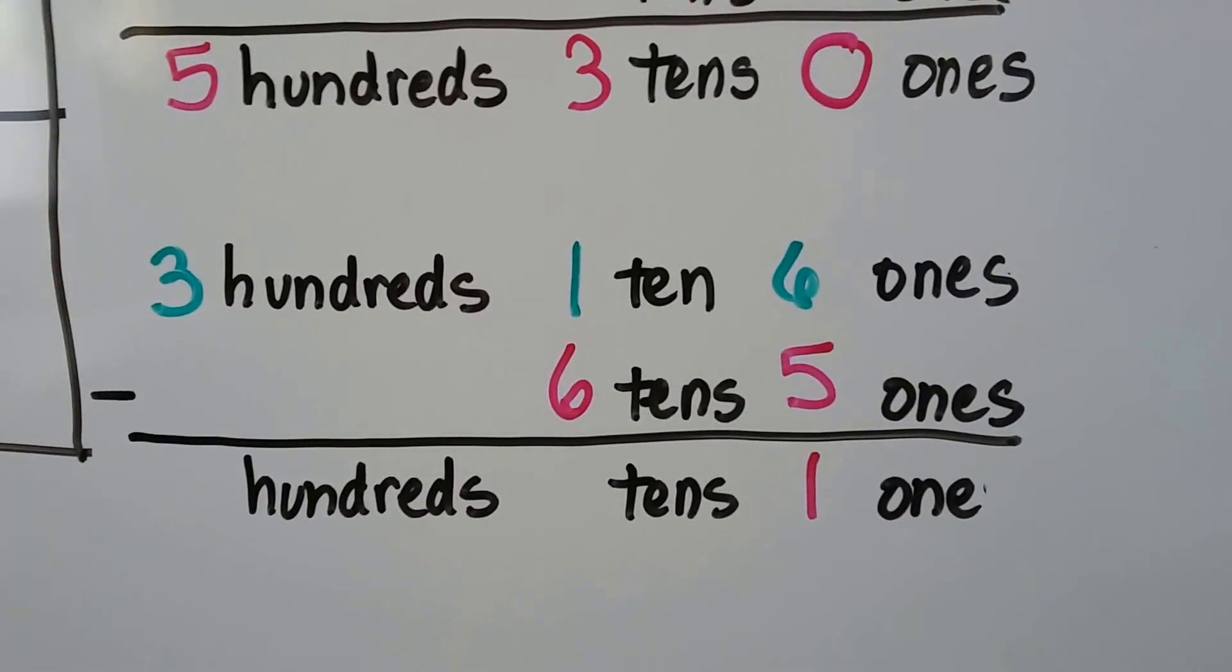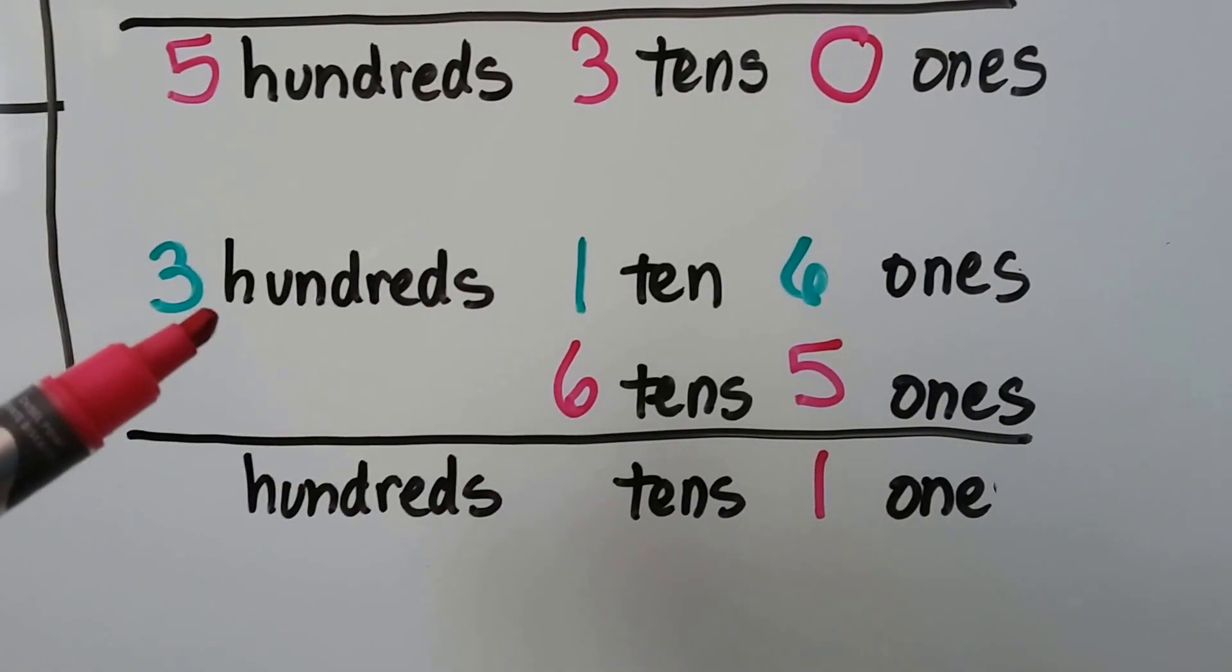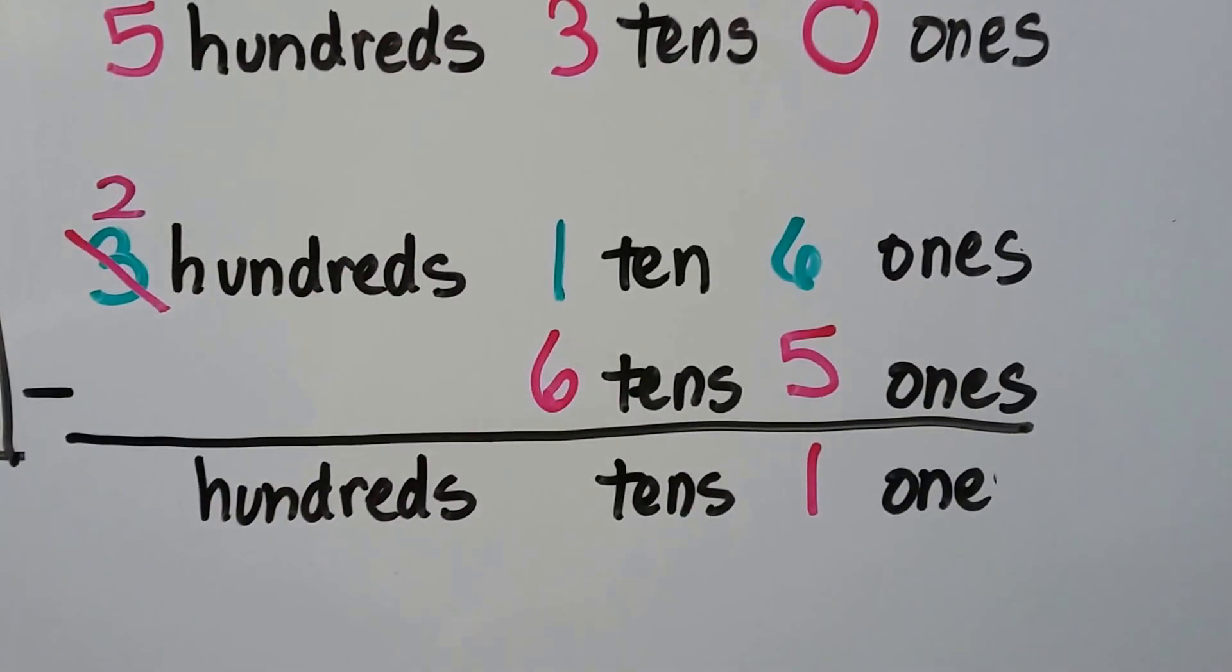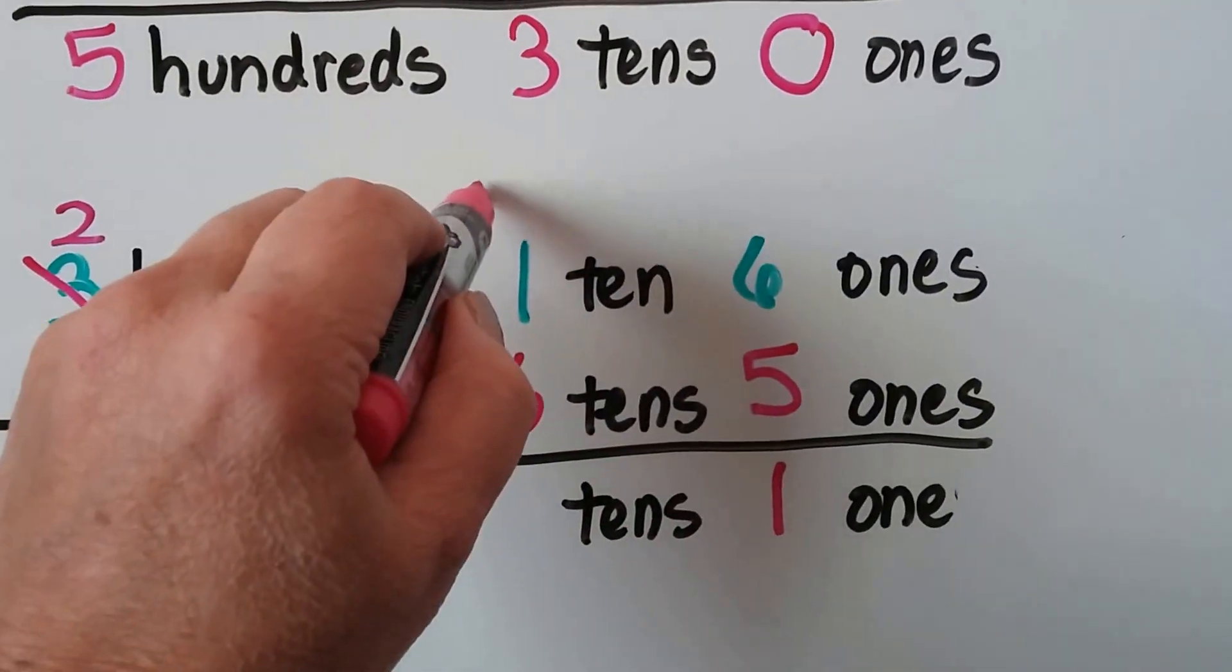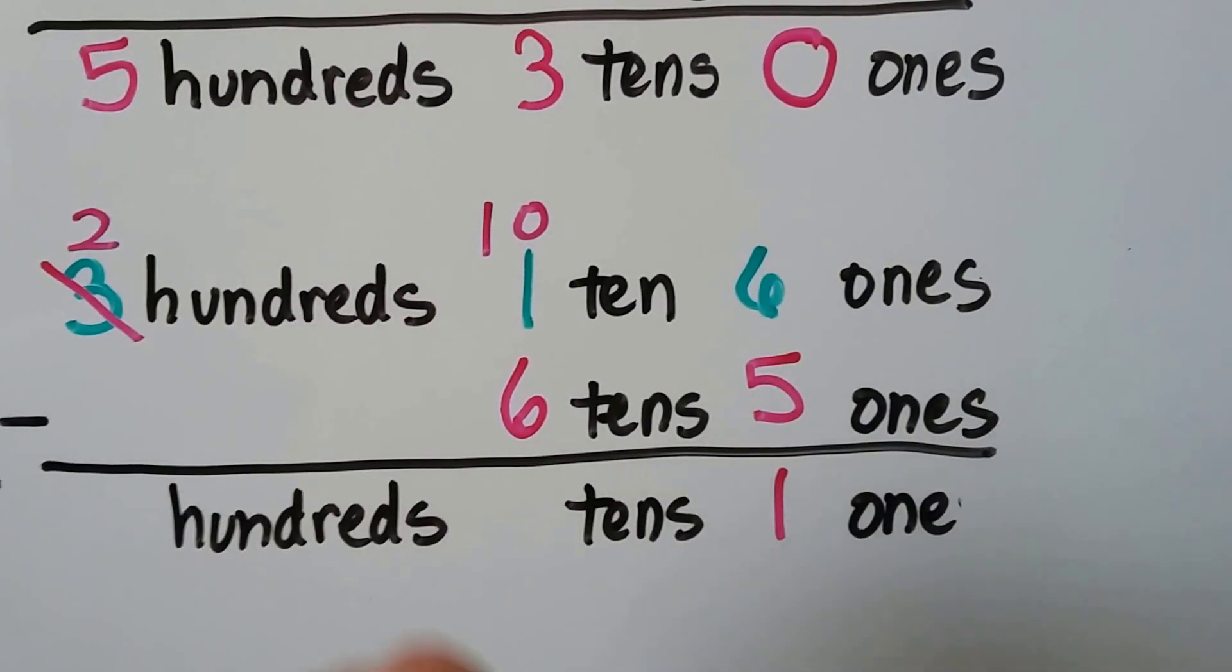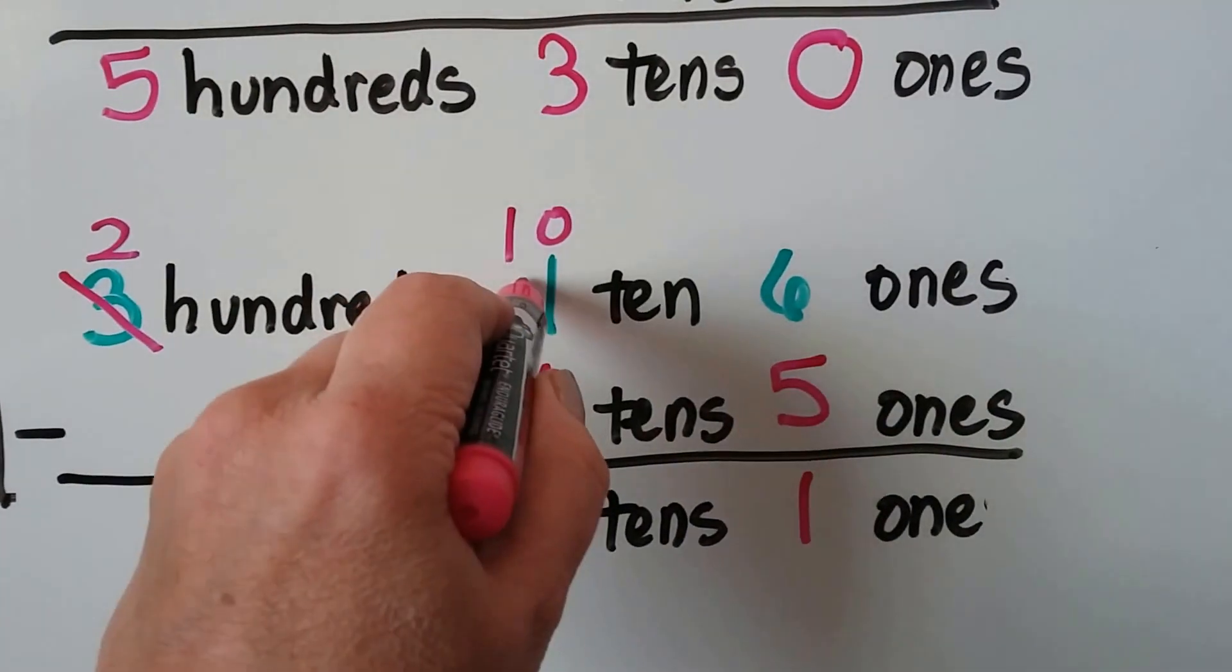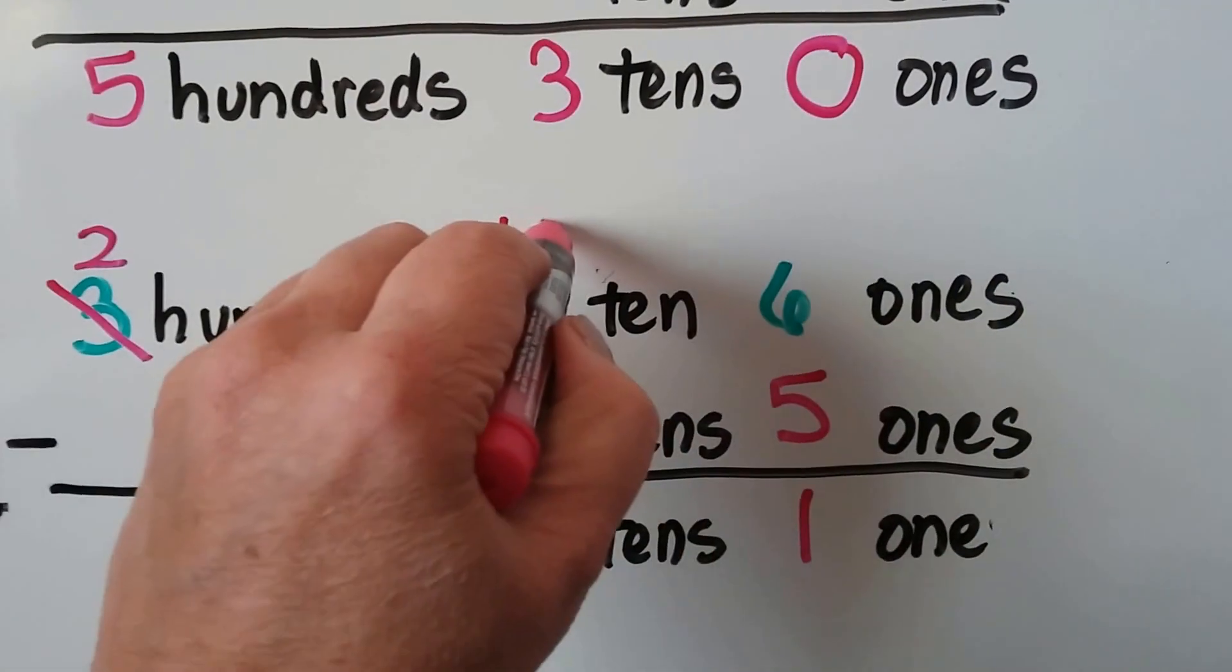We can't do that, can we? You can't have 1 and take 6 away. So what we're going to have to do is we're going to have to regroup. We're going to have to take 1 of these hundreds, and now that's going to become 2 hundreds. And we're going to have to give it to the tens place. So now, instead of 1 ten, we have 10 plus 1 is 11. We have 11 tens. See that?